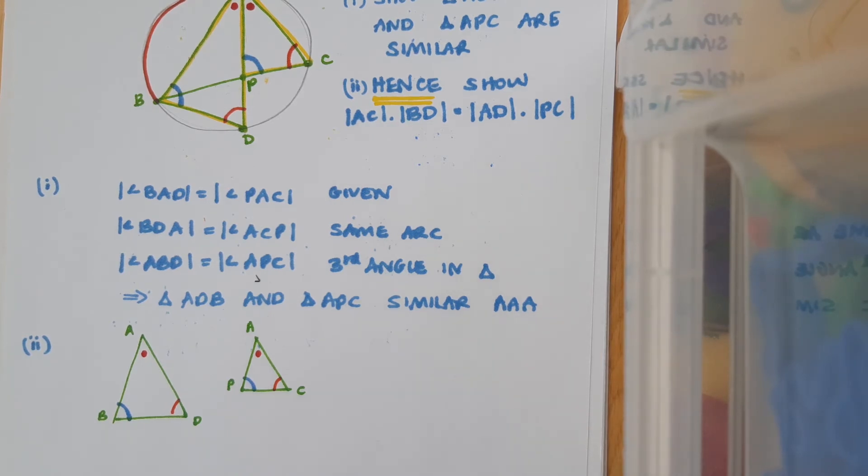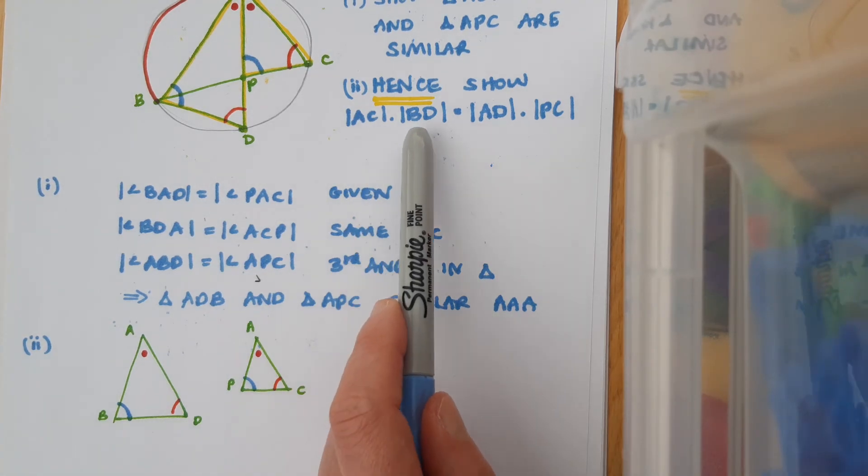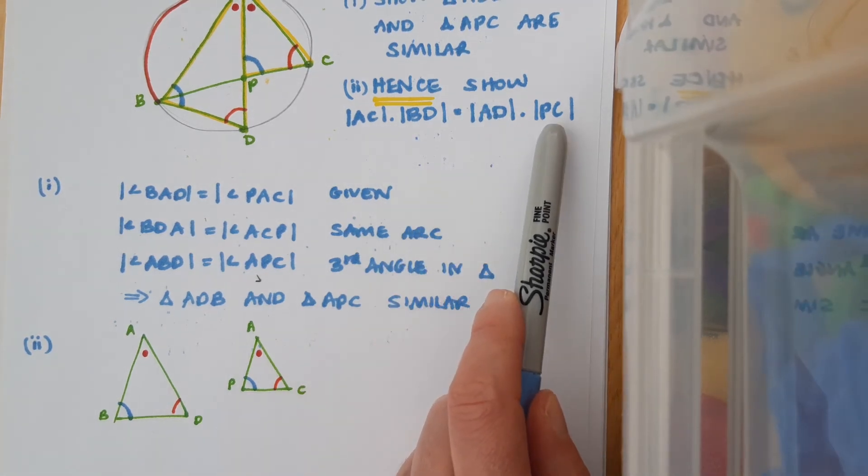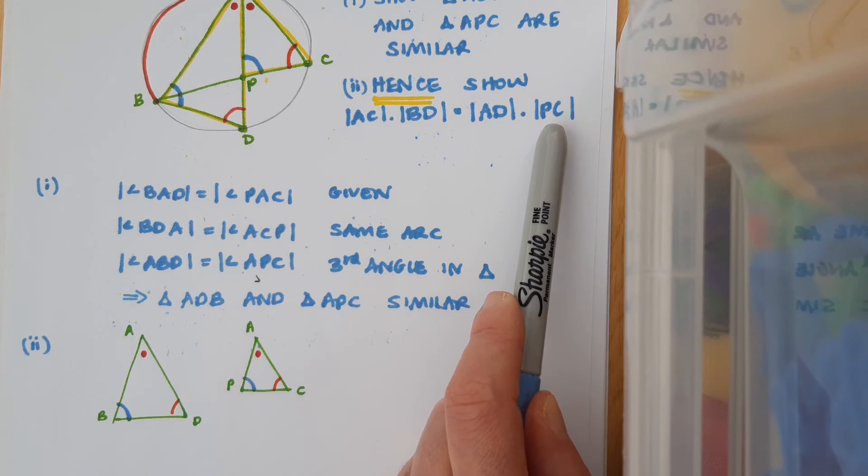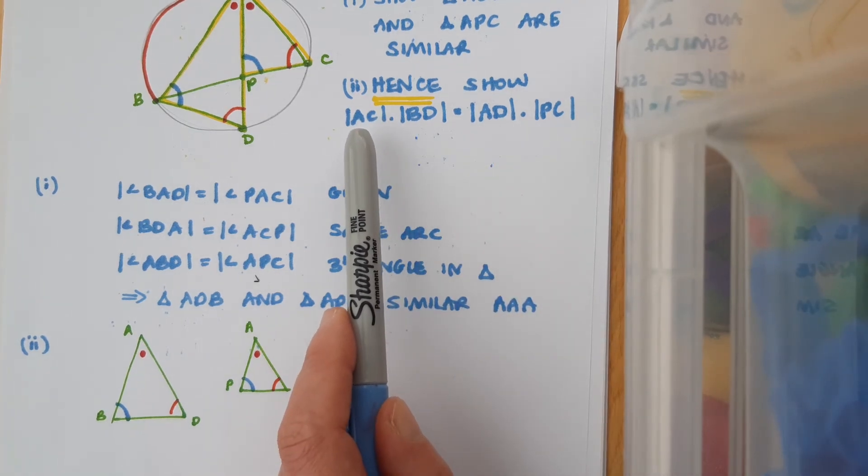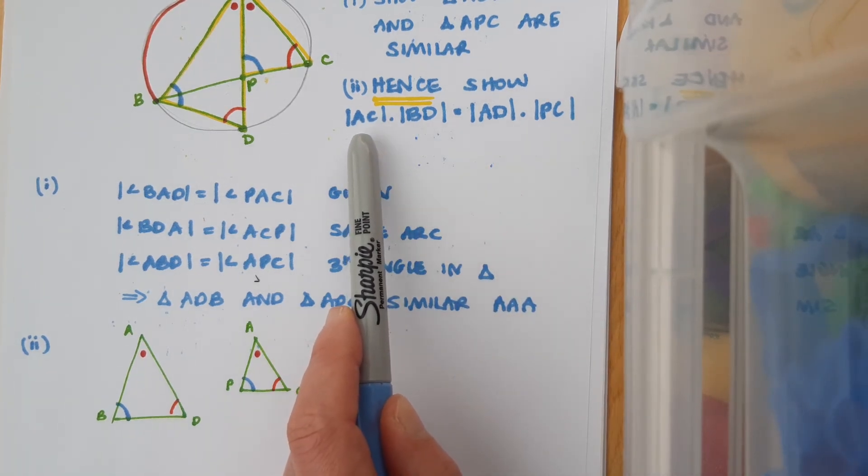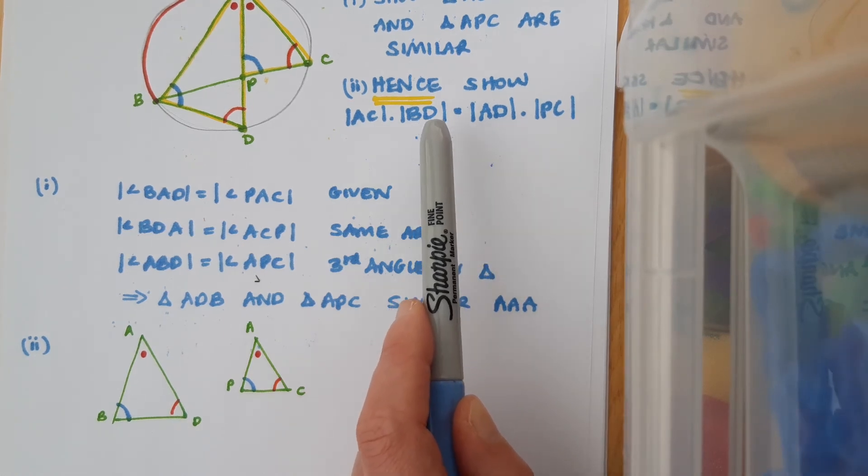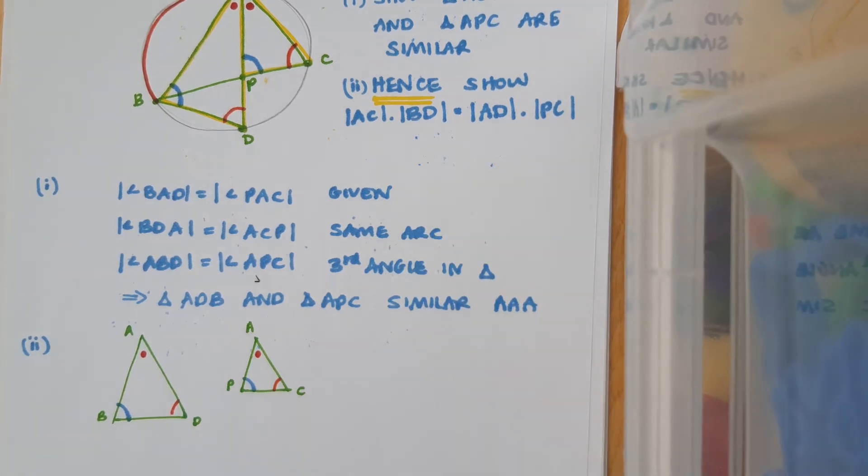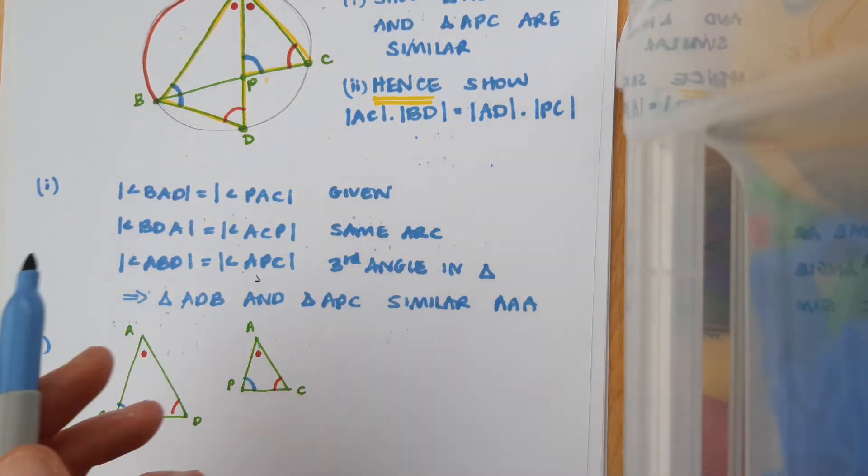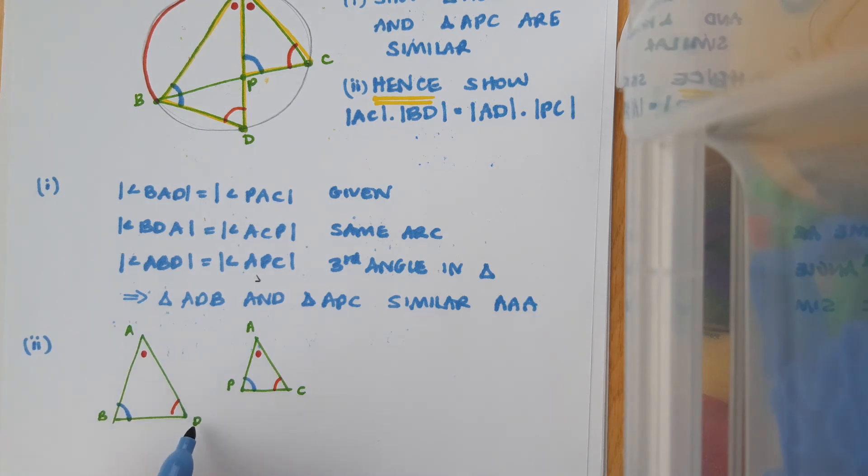So I'm looking at what I want to show, AC, BD, and AD, PC. So I'm going to try and make two fractions, so that one of which involves AC and one of which involves BD. So let's see what I can do with that. I've got this side AB. That isn't mentioned up here. I've got this side BD. Oh yeah, I can see that mentioned. So I'm going to say BD over PC.